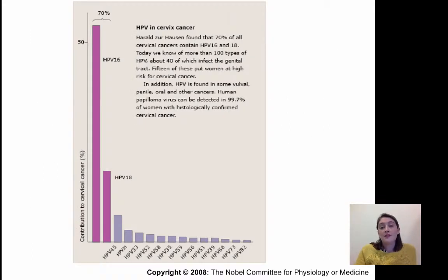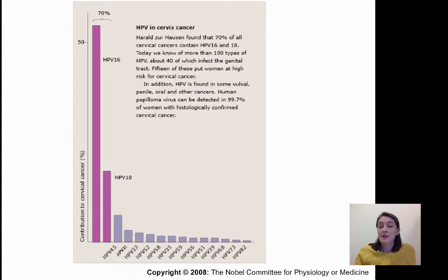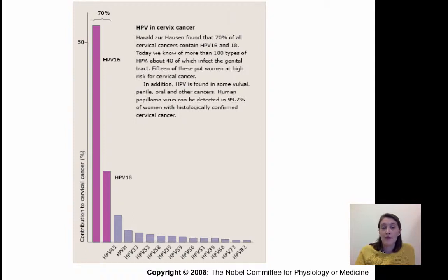The work that Harald zur Hausen did was showing that HPV is present in cervical cancer. When you look at cervical cancer and examine for the presence of HPV, you see many different strains. There are different subtypes of HPV — 70% of cervical cancers are found to be positive for HPV-16 and HPV-18. Today we know there are about 100 different types of HPV, about 40 can infect the genital tract, and 15 of these put women at high risk for developing cervical cancer.